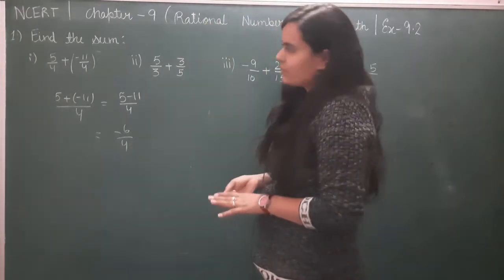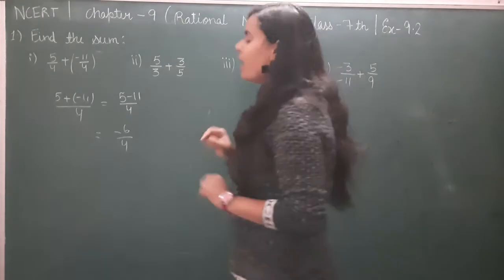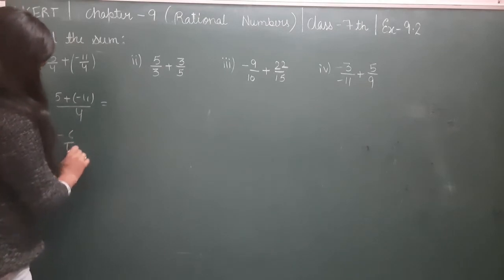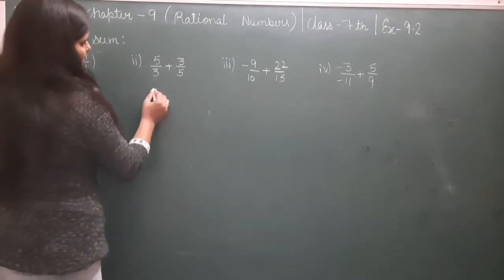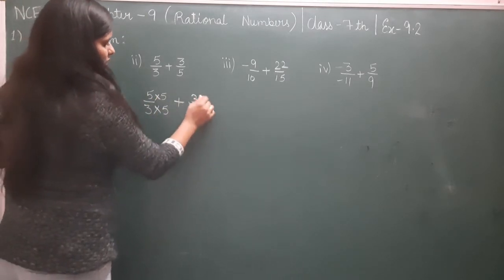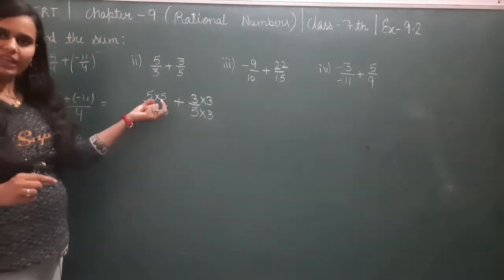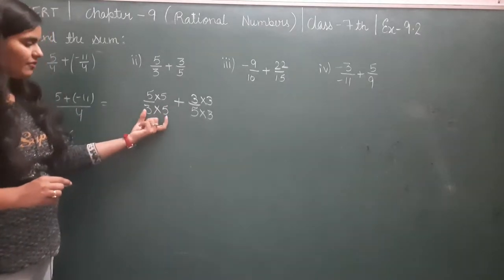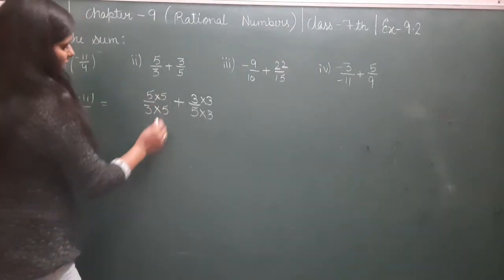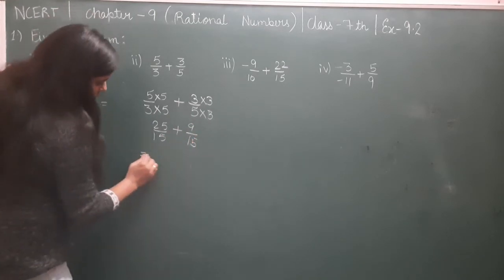In the next part, denominators are not same, so we'll make them same. This is the first method. We multiply this by 5 and this by 3. The LCM of 5 and 3 is 15. We need to make both denominators 15. This becomes 15 when multiplied by 5, that becomes 15 when multiplied by 3. Now 25/15 plus 9/15.